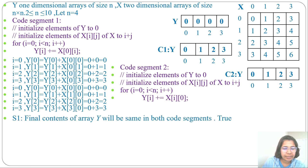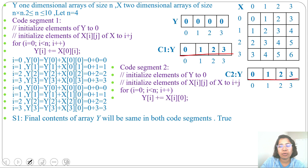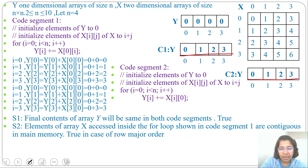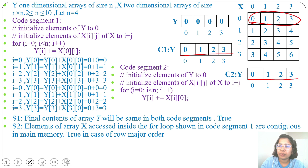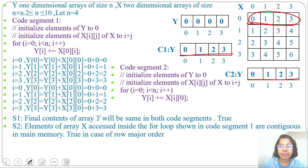Now let's read the statements. Statement 1: the final content of array Y will be the same in both code segments — this is TRUE. Both produce {0, 1, 2, 3}. Statement 2: elements of array X accessed inside the for loop in Code Segment 1 are contiguous in main memory. In Code Segment 1, we access X[0][0], X[0][1], X[0][2], X[0][3] — the first row. If stored in row-major order, these are contiguous, so Statement 2 is TRUE.